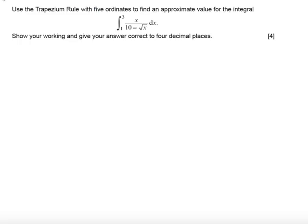Five ordinates means there is going to be four strips. There's always one strip less than the number of ordinates. If we find the h value, that's the width of the strips: the upper value 3 minus the lower value 1, all over the number of strips which is 4. We get an h value of 0.5.